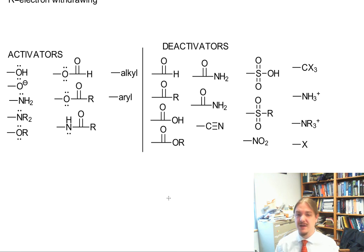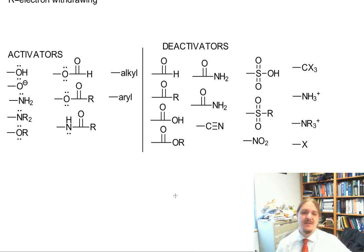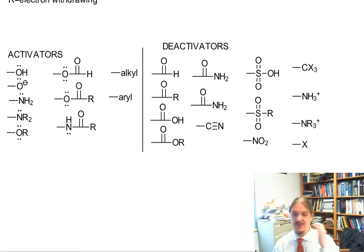This table summarizes the different types of activators and deactivators. In the next couple of videos, we're going to understand how these groups also affect the regiochemical outcome of reactions of substituted benzenes. Then we'll wrap up this series by comparing the different types of functional groups in a specific order: from strong activators to weak activators, then weak deactivators to strong deactivators.